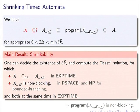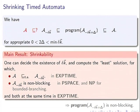Our main result is that one can decide and compute the least parameters delta times k for which A can be timed-simulated by the shrunk automaton and the shrunk automaton is non-blocking. If you just want simulation, this is in EXPTIME. For non-blocking alone, it is in PSPACE and in NP if the number of edges per location is bounded by a constant. If you want both properties with the same delta and k, this is also in EXPTIME, and implies the program semantics is non-blocking and simulation-equivalent to the specification.